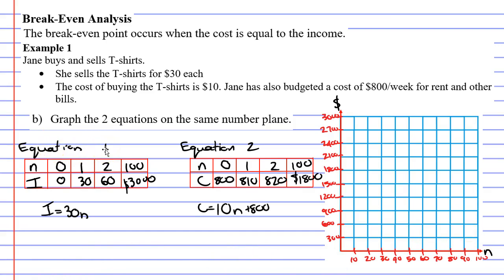So if we look at equation one, which is our income equation, we see we've got the point zero, zero, so we'll mark that. And we'll skip ahead to the point where n is $100 and our income is $3,000. That's right up at the top corner here. And all we need to do is just join these with a straight line. We'll put an arrow to show that it goes on forever.